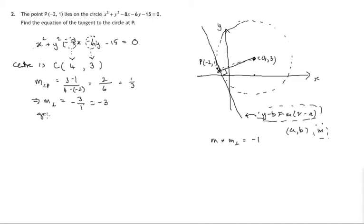So gradient of tangent is negative 3. And look at the diagram, one along, three down, one along, three down. That's what negative 3 means for a gradient. That looks okay for the gradient of that tangent. So gradient of tangent is negative 3.